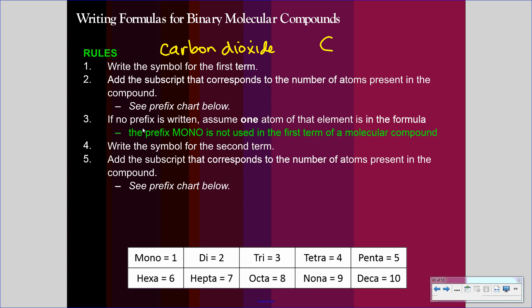Then write the symbol for the second term. Okay, perfect. Oxygen, there we go. And then we'll add the subscript that corresponds to the number of atoms present here below. Dioxide, 2, CO2. That's pretty much how writing the formula goes. What you have to do is memorize these prefixes. You've already seen them because of our discussions on hydrates, but we do need to commit them to memory.